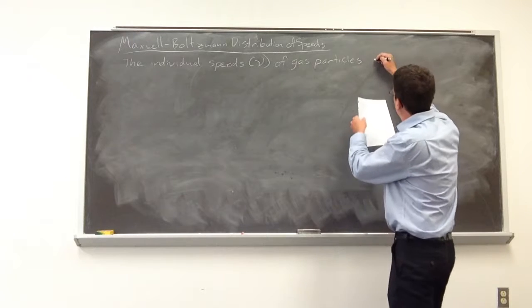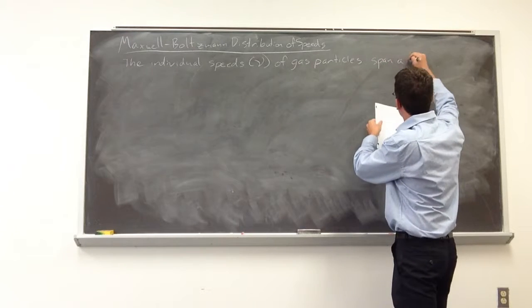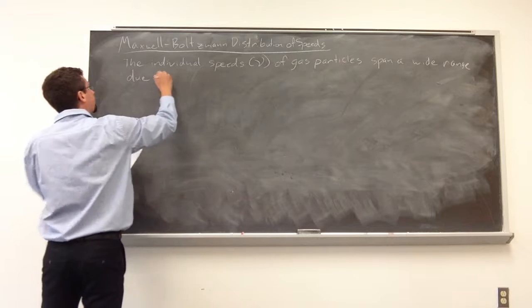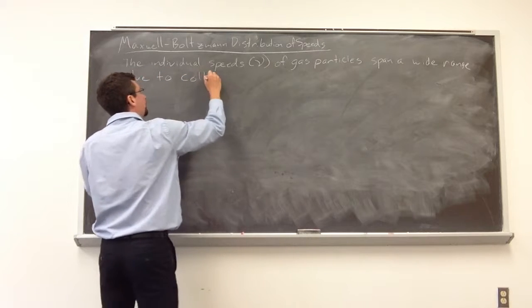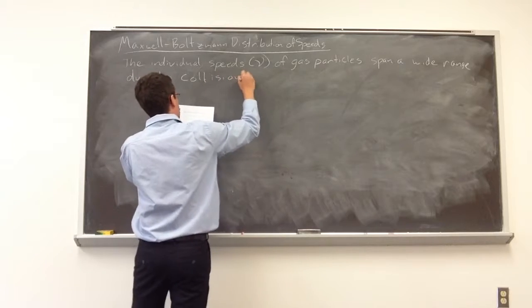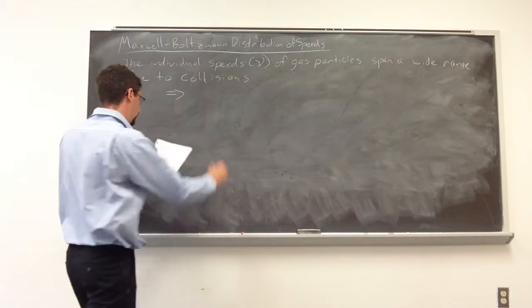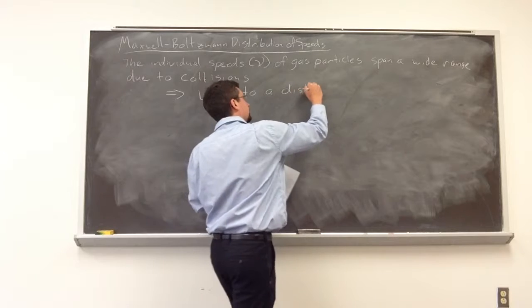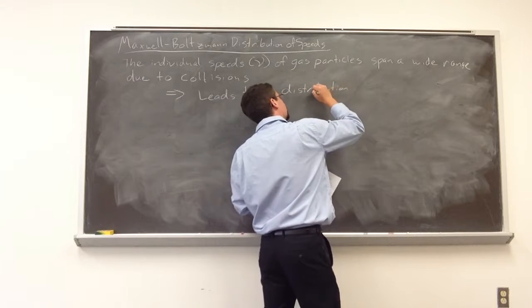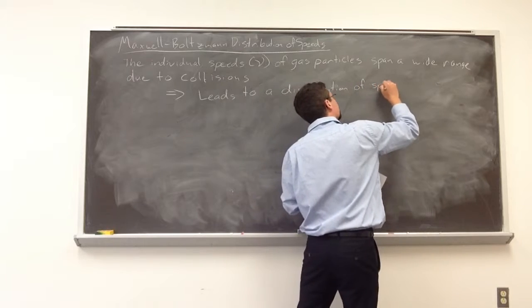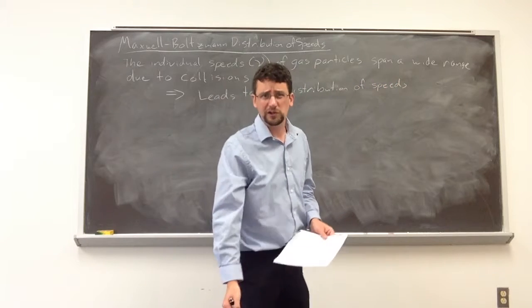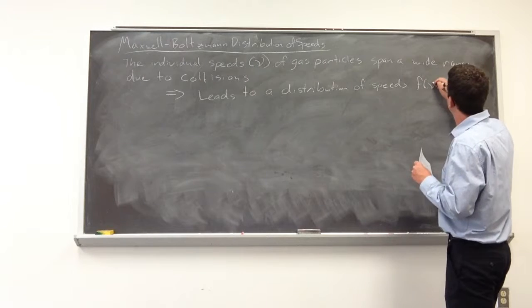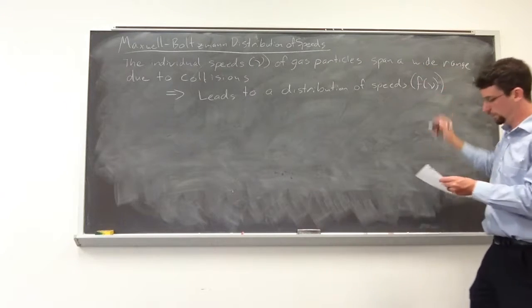So we get a distribution of speeds. So the individual speeds of gas particles span a wide distribution due to the collisions. And this leads to a distribution of speeds or kinetic energy or energy in this case. And we talk about this distribution, we give it the symbol F of nu like that.